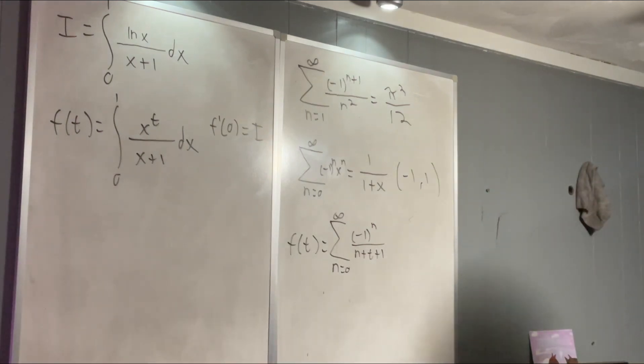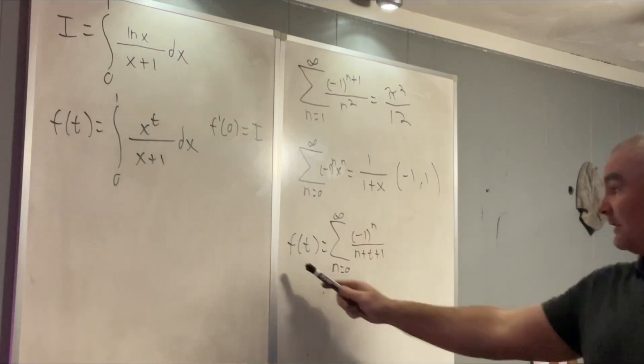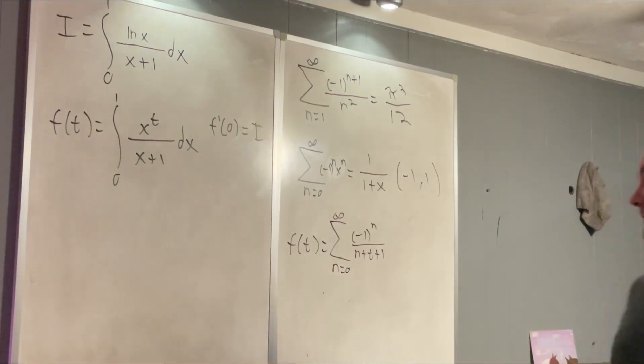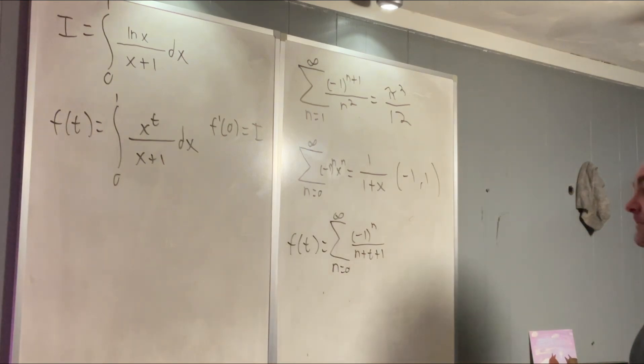It's going to be negative 1 to the n over n plus t plus 1. There we go. There is a totally valid representation of our function of t and that thing is easy to take the derivative of.